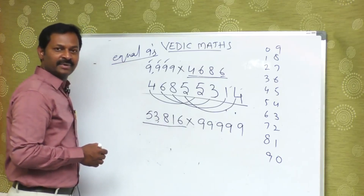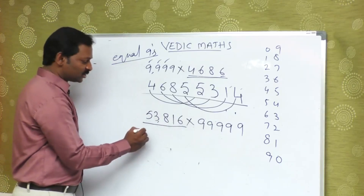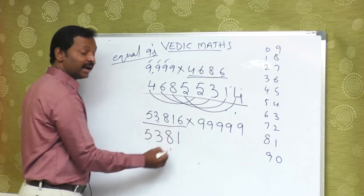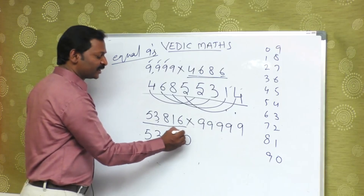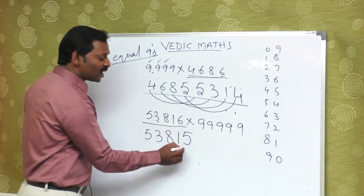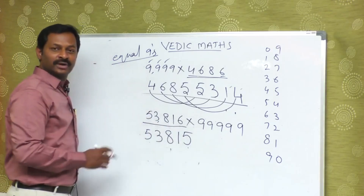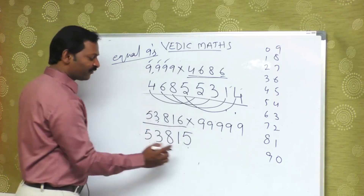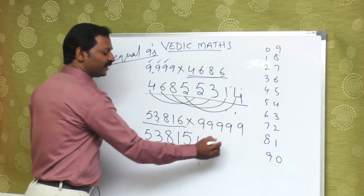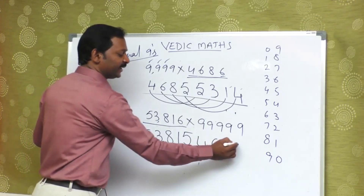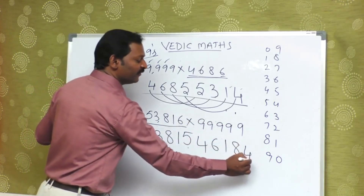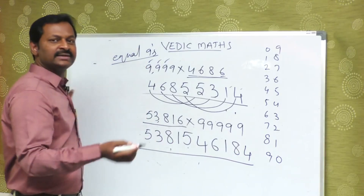53,816 is the number given. So: 5, 3, 8, 1, and 5 — this is the first part of the answer. The friend of 5 is 4, the friend of 3 is 6, the friend of 8 is 1, the friend of 1 is 8, and the last friend of 5 is 4. Friend means: two numbers that add up to 9.